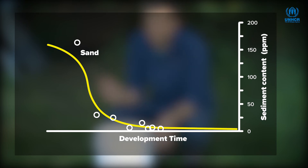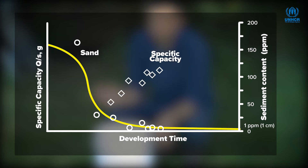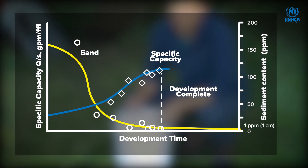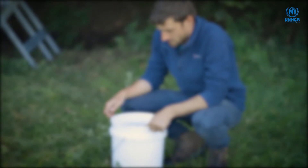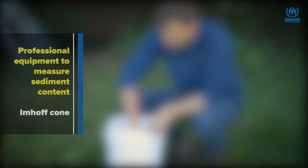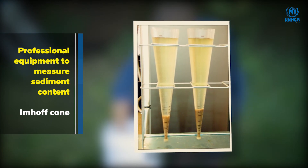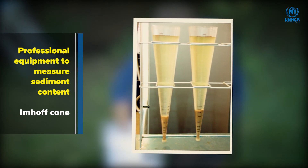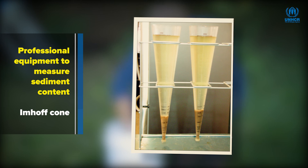When the target value of one centimetre diameter of sediment is seen in the bucket and the flow rate is stable, then the well development is finished, but only if it's been ongoing for at least two hours. For precise measurements of sediment content, an Eimhoff cone is used, but in many cases the bucket test is sufficient and far better than nothing.